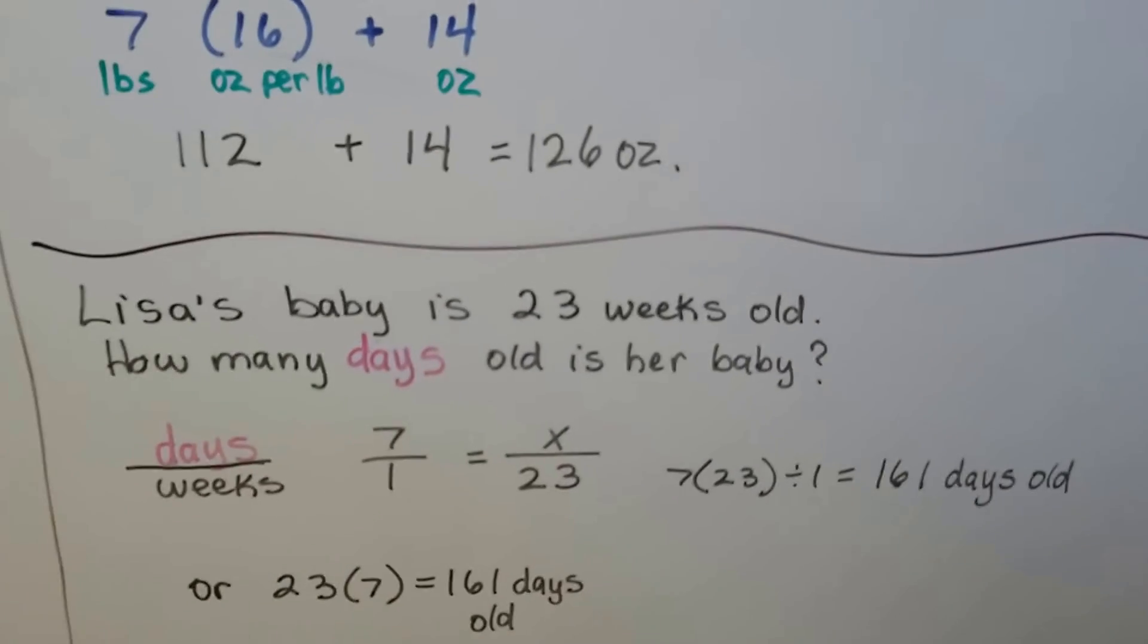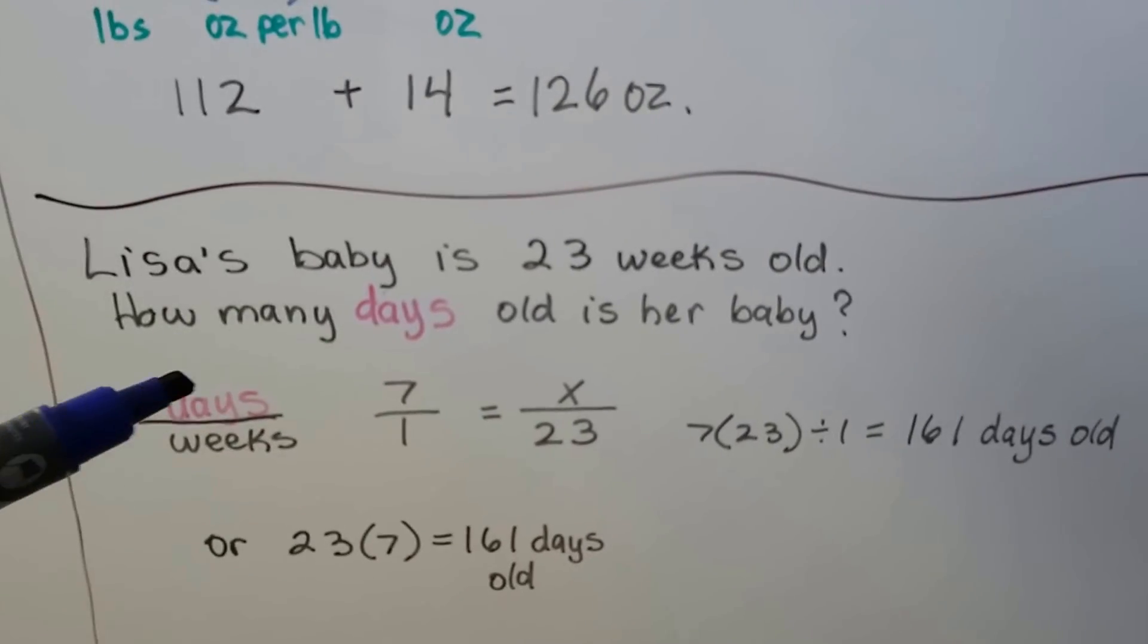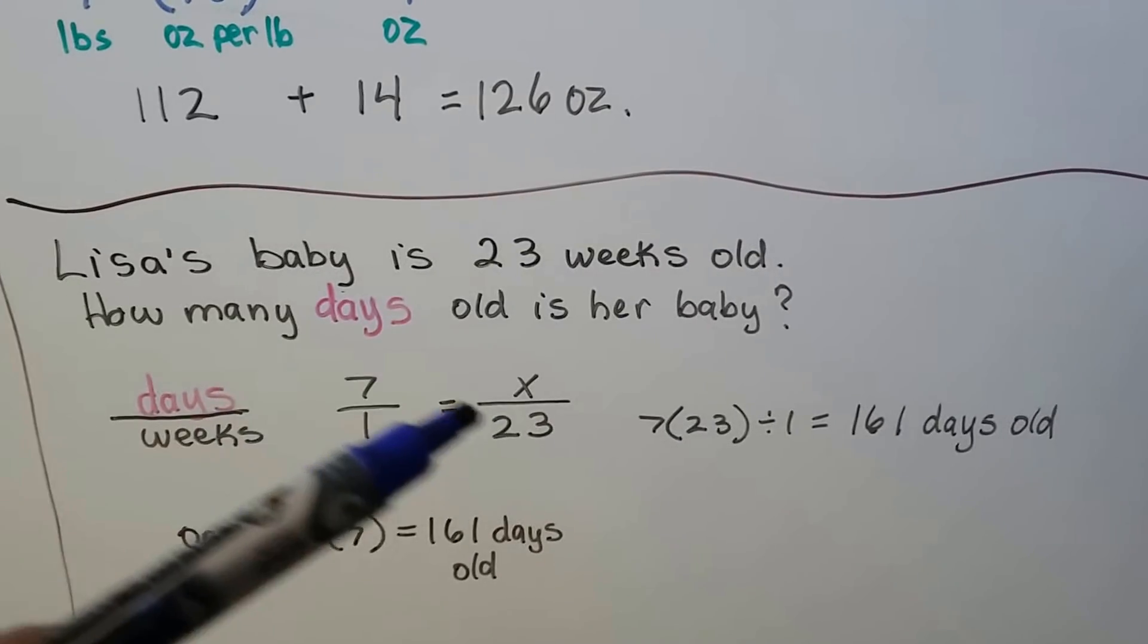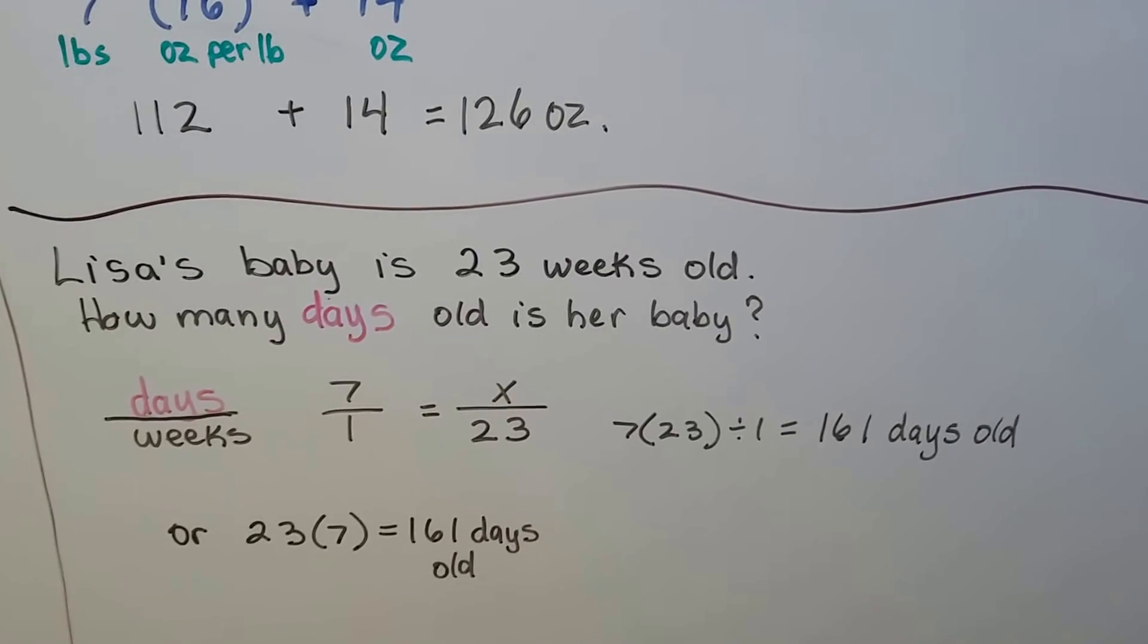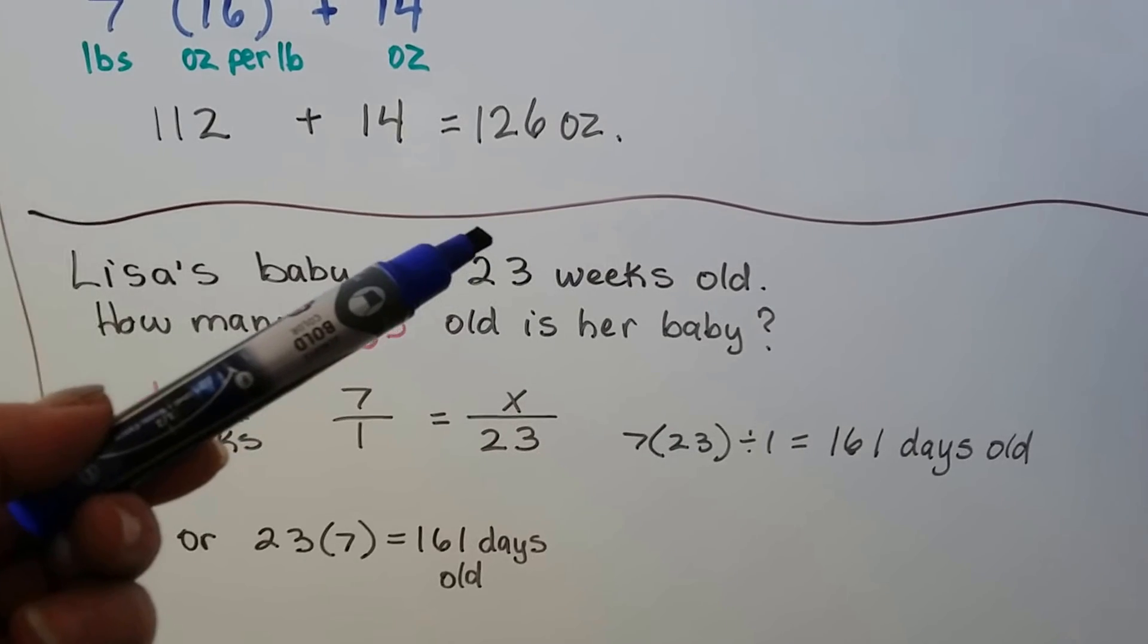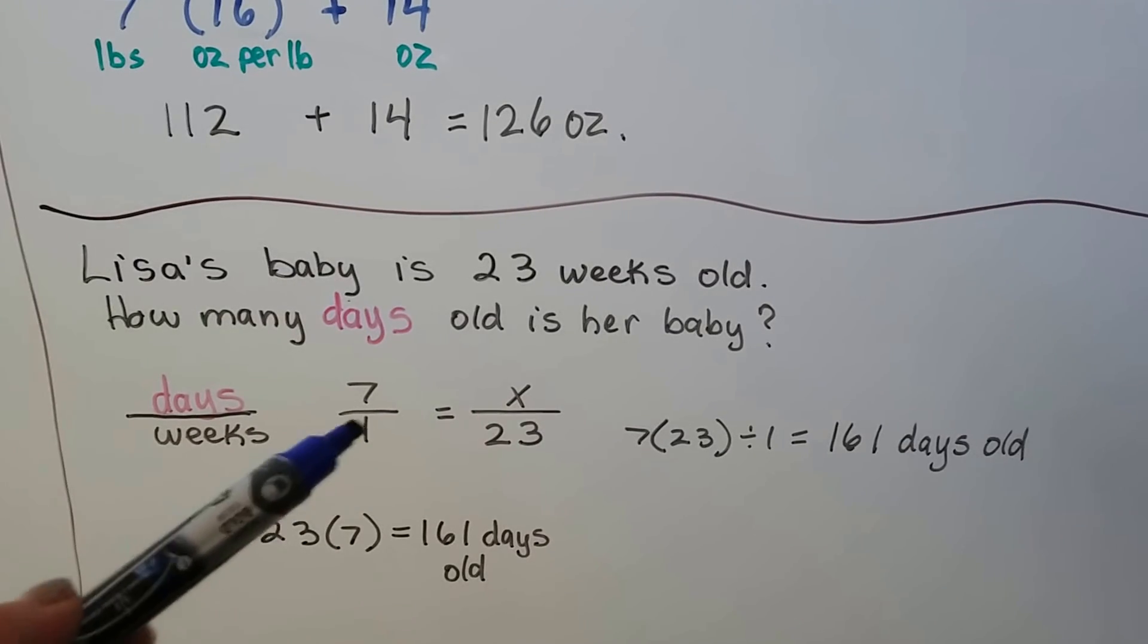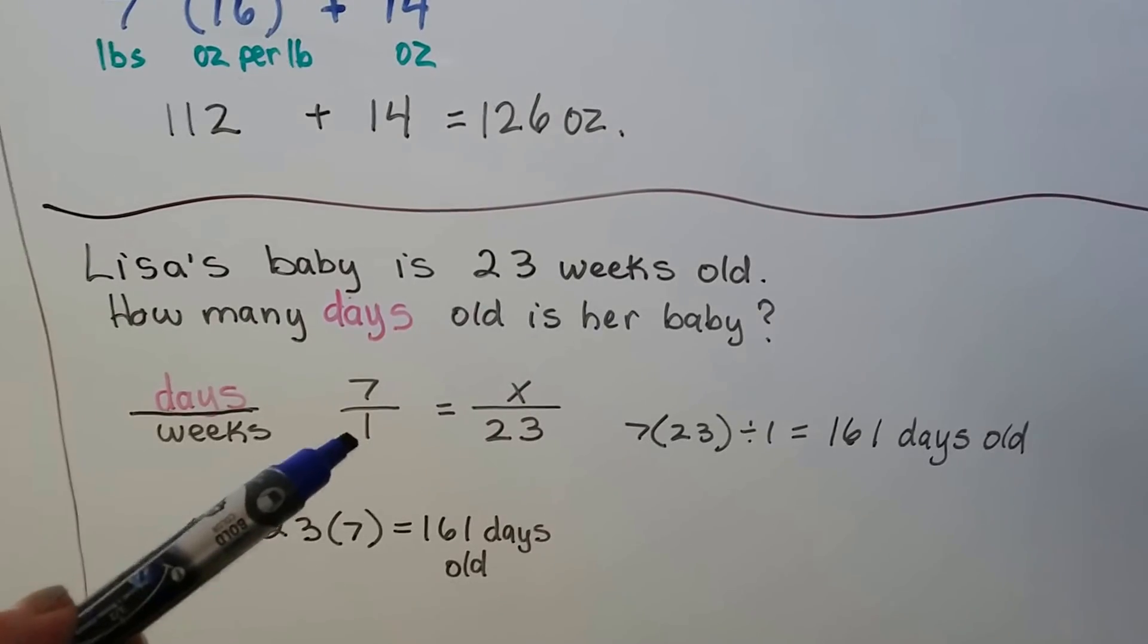Lisa's baby is 23 weeks old. How many days old is her baby? We're looking for days, so that's going to be the numerator over the weeks. There's 7 days in one week. It's 23 weeks. We need to find X. We do 7 times 23, which is 161, divided by 1 is 161. We can also quickly say to ourselves, we know there's 7 days in a week, and if there's 23 weeks, we just multiply 23 times 7. We get 161. That's easy when one of the units, either the numerator or denominator is a 1.